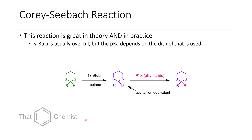The Corey-Seebach reaction involves lithiating a dithiane and trapping with an electrophile. Usually LDA works, though the exact base depends on the dithiane — the cyclic system can change the pKa of that proton. This gives a stable nucleophile you can trap in situ. In this first case we add an alkylating agent such as benzyl bromide, allyl bromide, or bromobutane — usually primary or secondary.